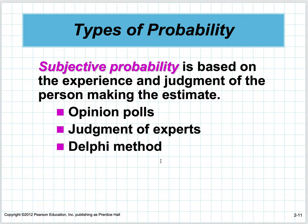Subjective probability is based on the experience and judgment of the person making the estimate. We have opinion polls, judgment of experts, and something called the Delphi method — we won't get into that. But, for example, we take a small percentage of the U.S. population, see who they're going to vote for president, and then tell us nationally that candidate A is ahead of candidate B by so many points.